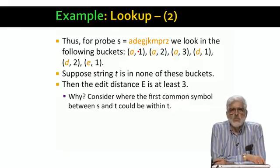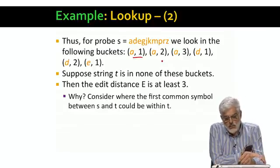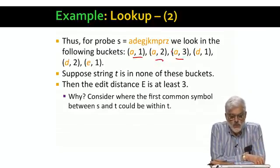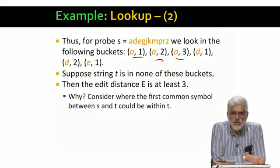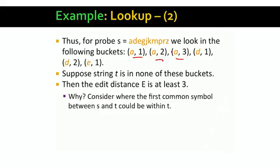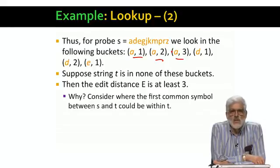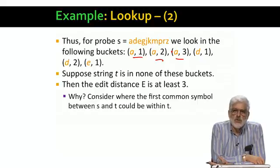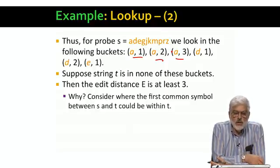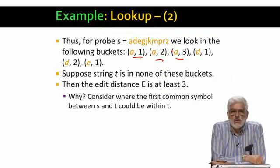If it is A, then that A is at least four positions back in T, because we would search for and find T if A were any of the first three positions, because we look at those buckets. If A is at least four positions back in T, then there are three symbols in T that precede A in the first symbol of S. And therefore, there must be at least three symbols of T must be deleted to convert T into S.